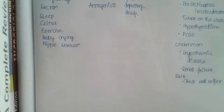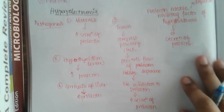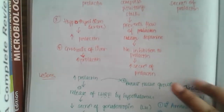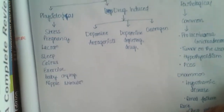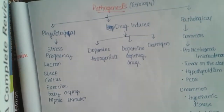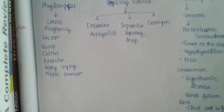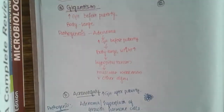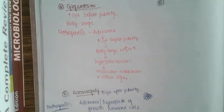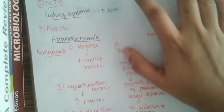So all these are the etiological factors seen in hyperprolactinemia. To summarize what we have learned: we covered the pathogenesis, lesions, and etiological factors of hyperprolactinemia. We have also previously covered growth hormone — gigantism and acromegaly — and ACTH leading to Cushing's syndrome, which will be dealt with in the next class.